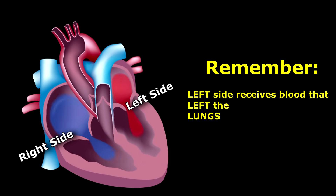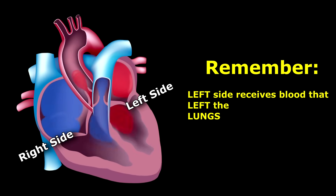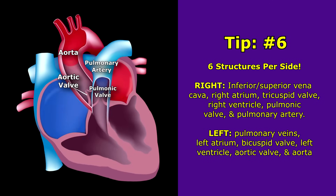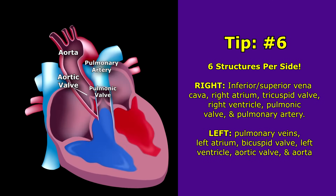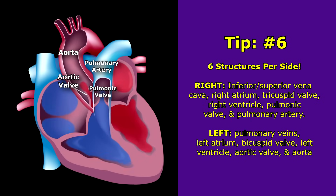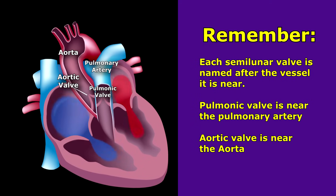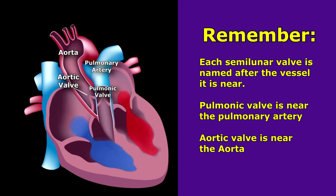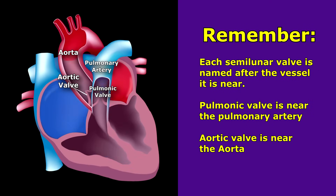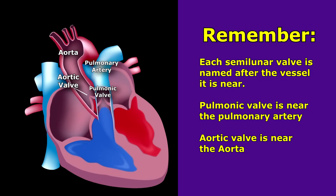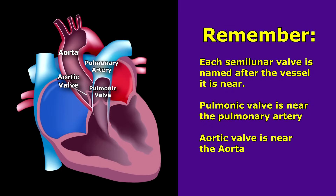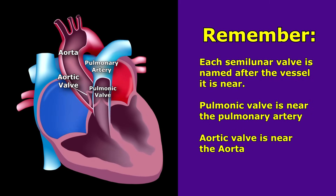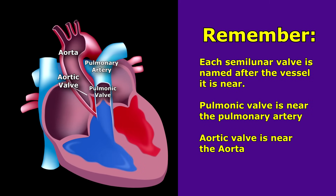Remember, the left side of the heart receives oxygenated blood that just left the lungs — left, lungs, and left all start with L. And if you can't remember how many parts blood flows through on each side, remember the number six: blood flows through six parts on the right side and six parts on the left side. Finally, for the semilunar valves, the name of the valve tells you what vessel it's near — the aortic valve is near the aorta on the left side, and the pulmonic valve is near the pulmonary artery on the right side.